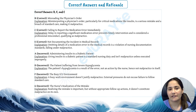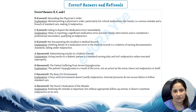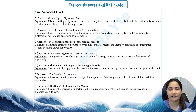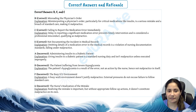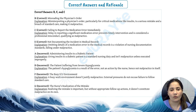Let's review the answers. The correct options are B, C, and E. Option B — misreading the physician's order: misinterpreting a physician's order, particularly for critical medications like insulin, is a serious mistake and a breach of standard care, making it malpractice. Option C — failing to report the medication error immediately: delay in reporting a significant medication error prevents timely intervention and is considered professional misconduct, qualifying as malpractice. Option E — not documenting the incident in medical records: omitting details of a medication error in medical records is a violation of nursing documentation standards, falling under malpractice.